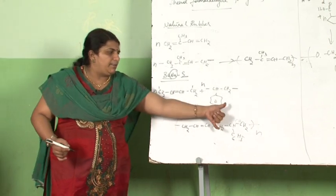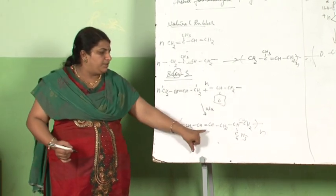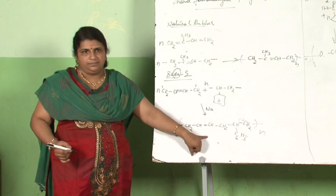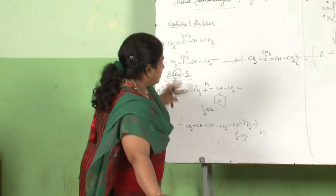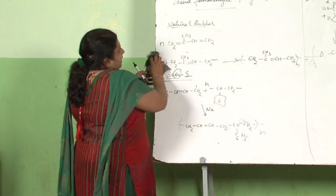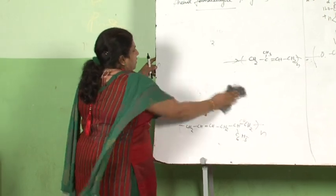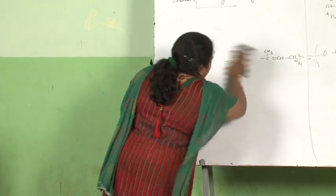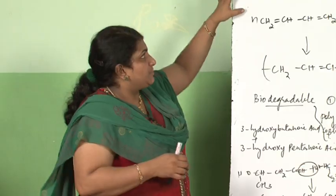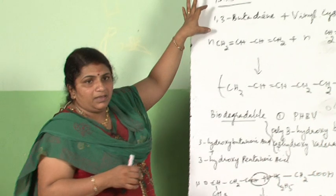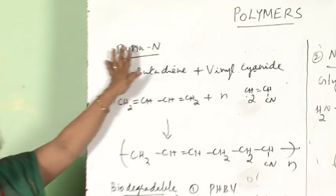You will get Buna S — butadiene combined with styrene in the presence of sodium to give Buna S. In the same way, Buna N is also there — that is the last polymer in this section which you have to study.